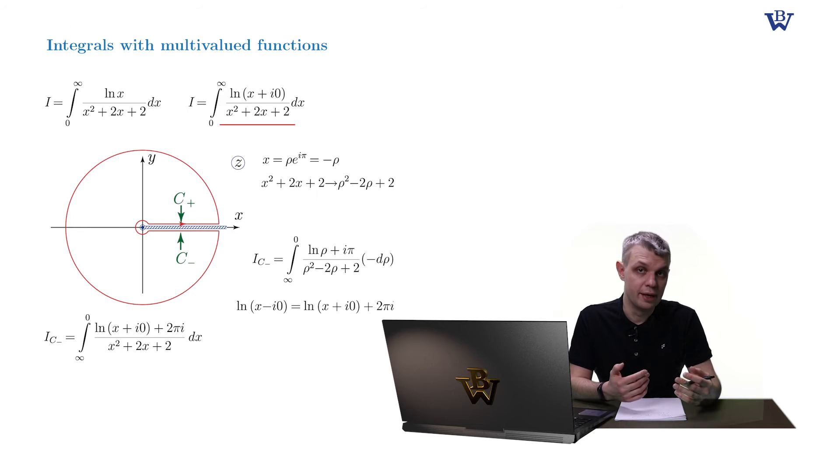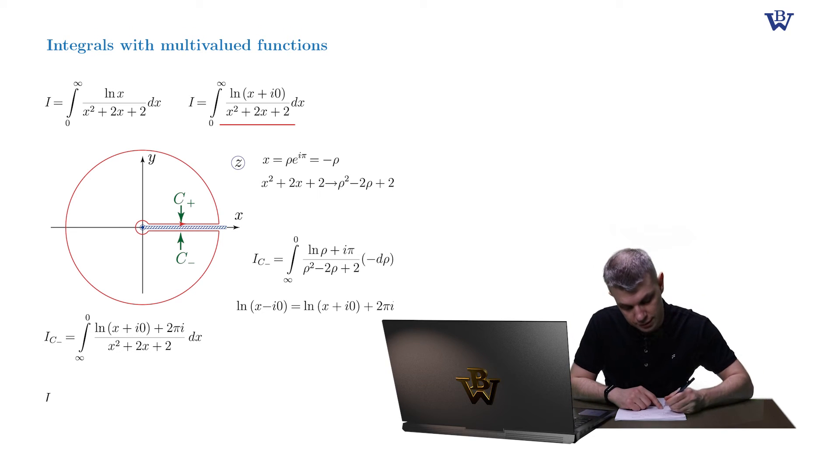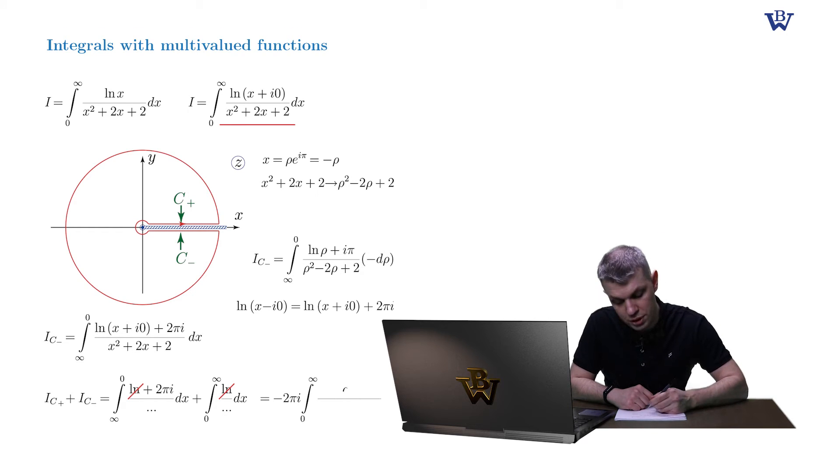So once we combine the upper and lower bank integrals and interchange the limits of integration in the second one, we will obtain the cancellation. And the only remaining integral is the remainder term, which is of no interest.